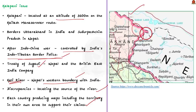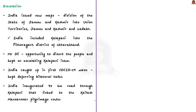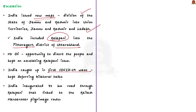Going back to the article: India issued new maps following the division of the state of Jammu and Kashmir into Union Territories — Jammu, Kashmir and Ladakh — and included Kalapani into the Pithoragarh district of Uttarakhand. Kalapani is a contested area between India and Nepal with both countries claiming it as an integral part of their territory. Mr. Oli used this issue as an opportunity to divert Nepal's people from local issues. But India was caught up in the first COVID-19 wave and kept deferring bilateral talks with Nepal.